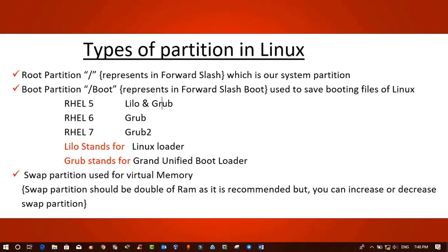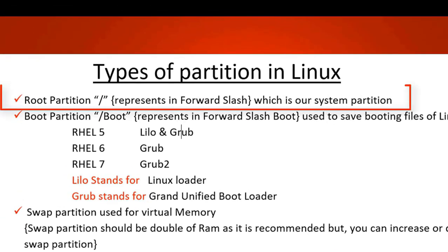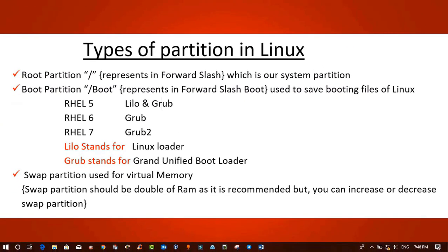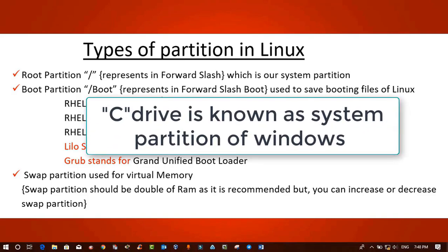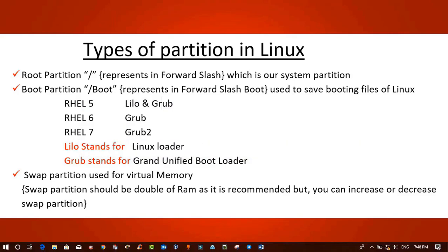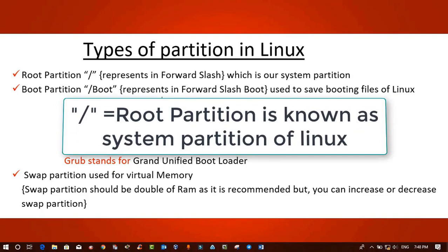In Linux, our first partition is the root partition and it is our system partition. Let me give you an example. When we install the Windows operating system on any machine, the complete information of Windows gets saved inside the C drive, and C drive is known as the system partition of Windows. Likewise, when we install Linux, the complete information gets saved inside the system partition of Linux, which is known as the root partition.